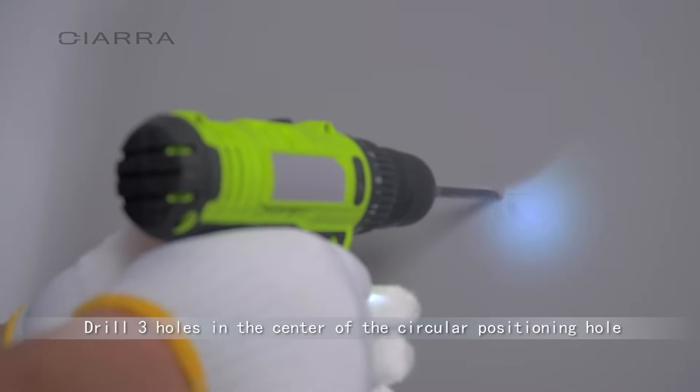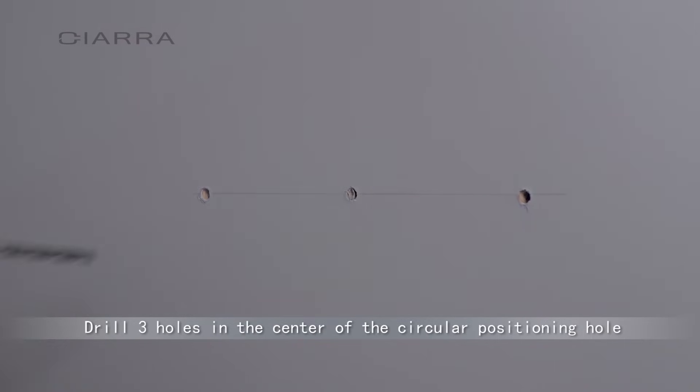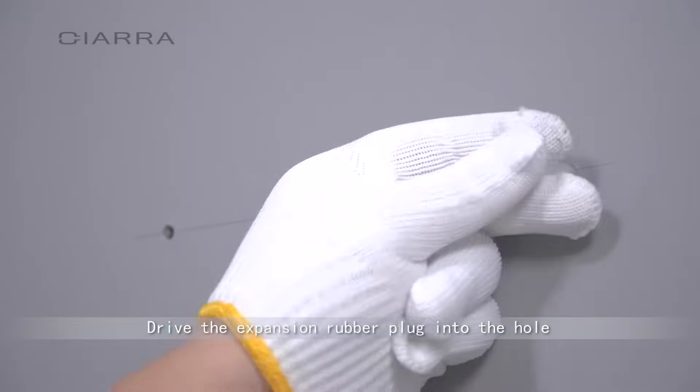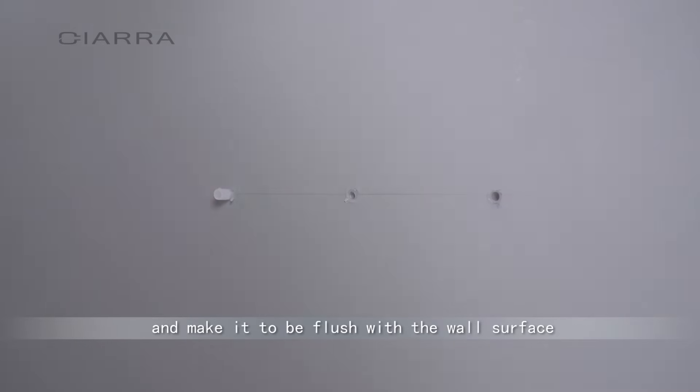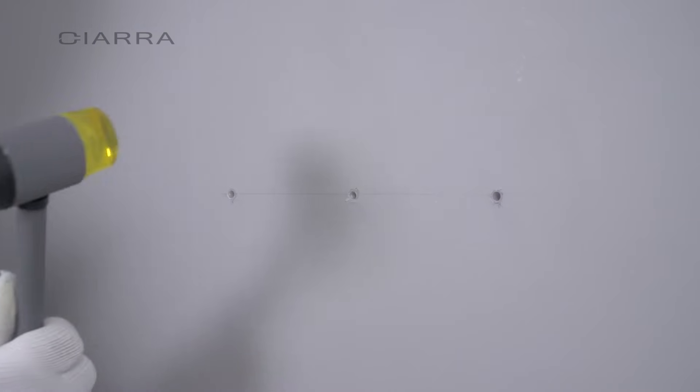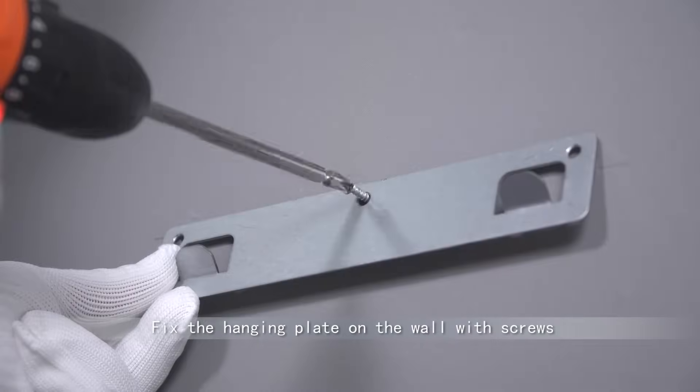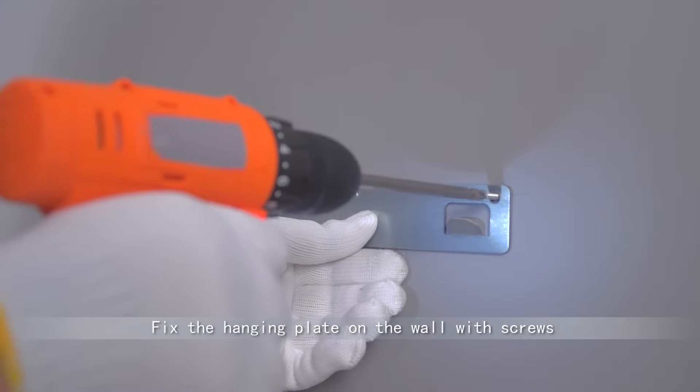Drill three holes in the center of the circular positioning hole. Drive the expansion rubber plug into the hole and make it flush with the wall surface. Fix the hanging plate on the wall with screws.